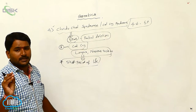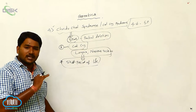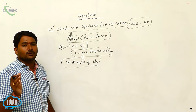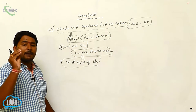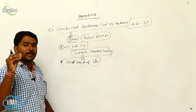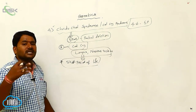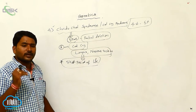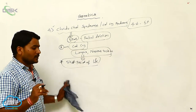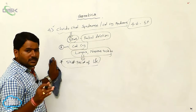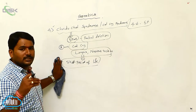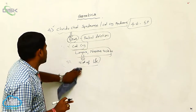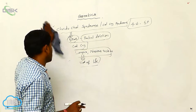It is important to remember that in Cri-du-chat syndrome there is no loss of an entire chromosome and no extra chromosome. What happens is that a part of the fifth pair chromosome is deleted, so the total chromosome number remains 46.